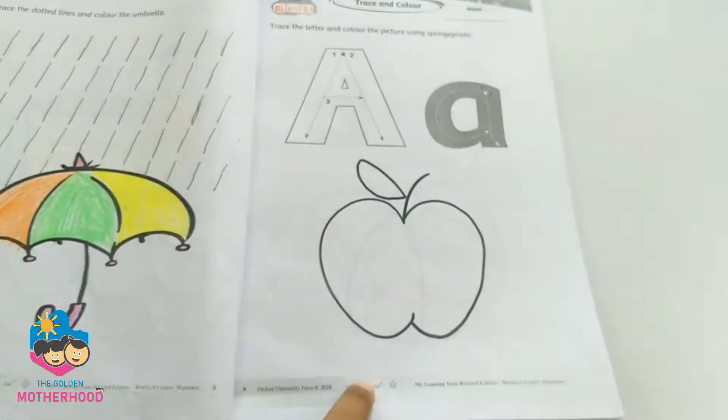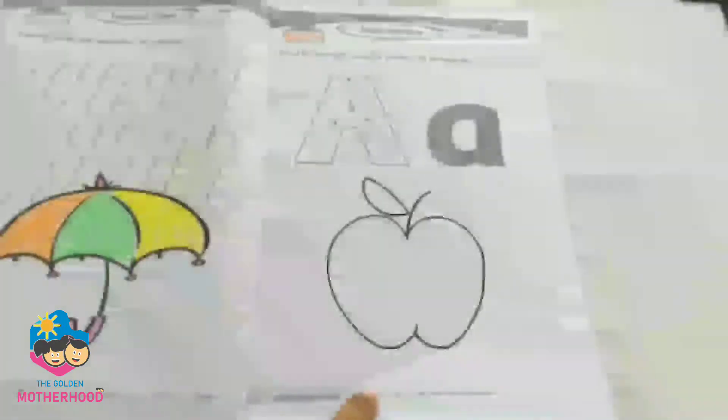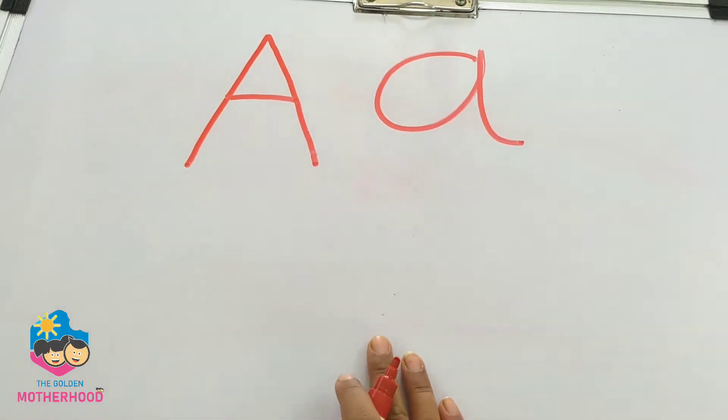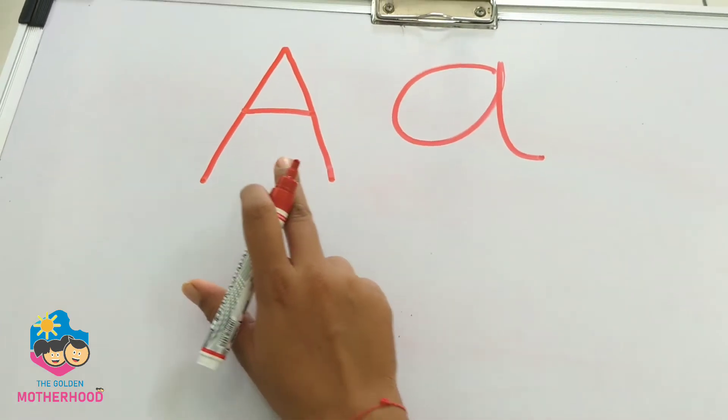Before starting to learn page number 4, I will teach you how to write letter A. A is a combination of two slanting lines and one sleeping line.